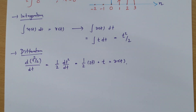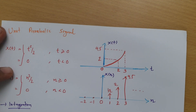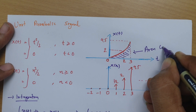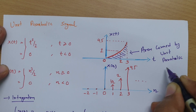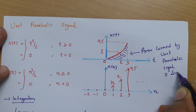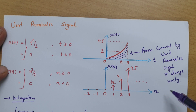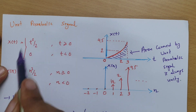These are the basics which are essential in solving examples, and one should know all of them. One more important thing: the area covered by the unit parabolic signal is always unity. If you calculate the area up to infinity, the area covered by the unit parabolic signal is always unity. This type of statement-based question sometimes appears in GATE examinations, so we should be ready for it.